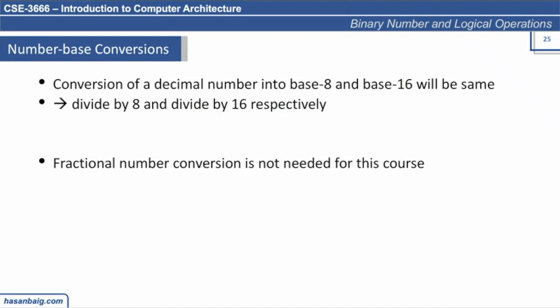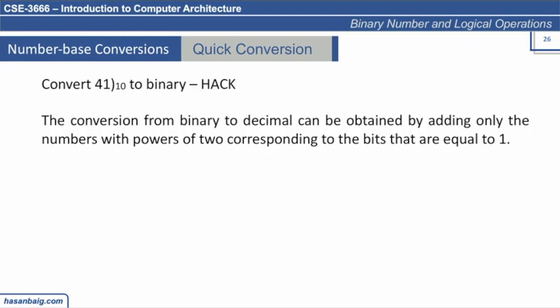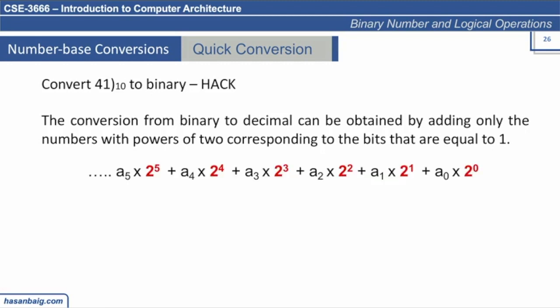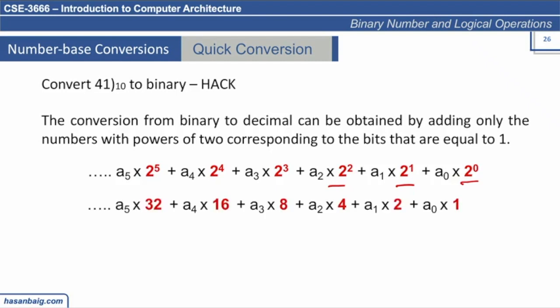There is a hack to quickly convert a decimal number into binary without the division procedure. You obtain the binary number by adding only those powers of 2 corresponding to bits that are equal to 1. Remember this pattern: the rightmost bit has weight 2^0 = 1, then 2^1 = 2, 2^2 = 4, 2^3 = 8, 2^4 = 16, 2^5 = 32, and so on.